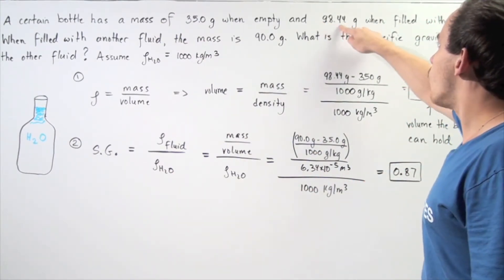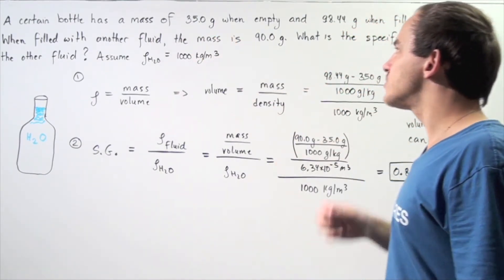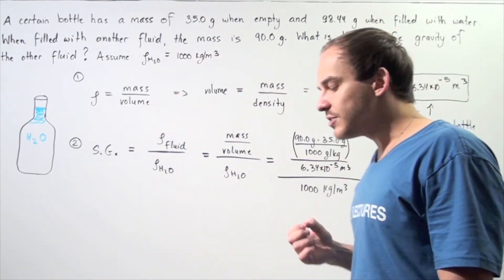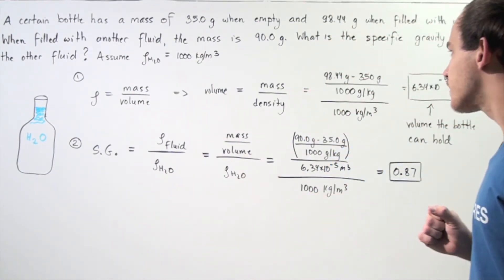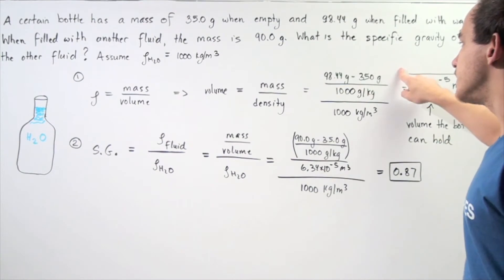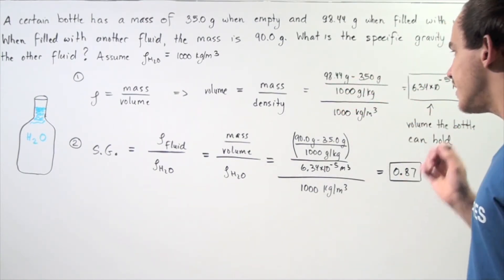So, 98.44 grams minus 35 grams gives us the amount in grams of water found inside our container. And if we take that difference and divide it by 1,000, that will give us the mass in kilograms.